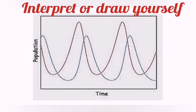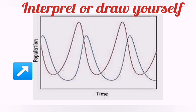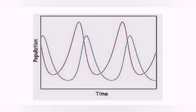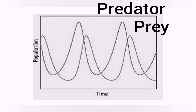Time is represented on the x-axis, and population size or number of individuals is represented on the y-axis. There are always two curves on this graph — one represents the number of prey, and the other represents the number of predators.